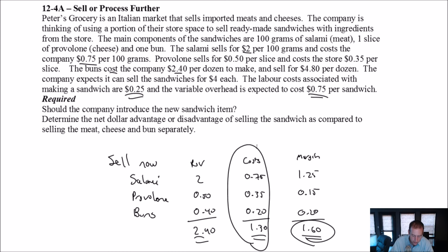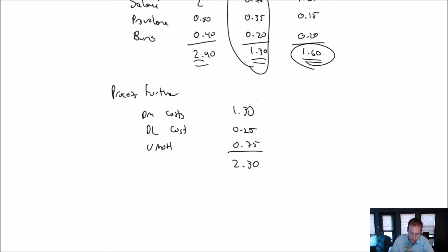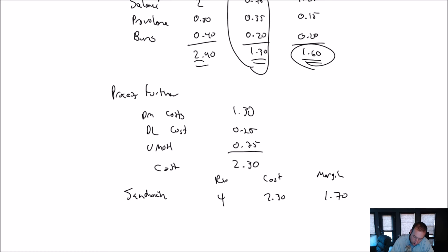So I get up to $2.30 in cost. So if I can sell sandwiches for $4 each after investing $1.30 in stuff and giving up $1.60 in profit, that's for sure. But if I can sell them for $4 each, well then, my sandwich revenue is $4.00. My cost is $2.30. My margins here are $1.70.